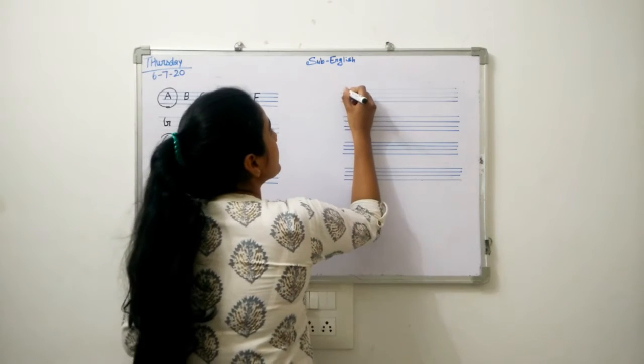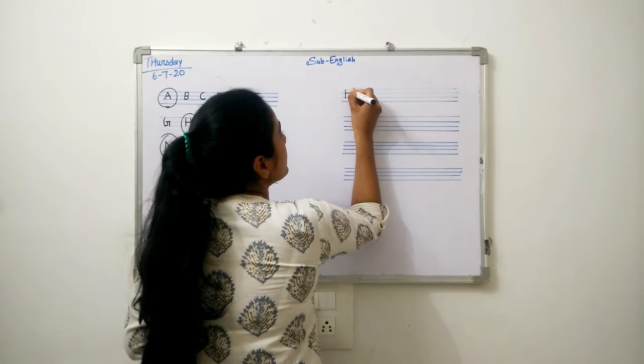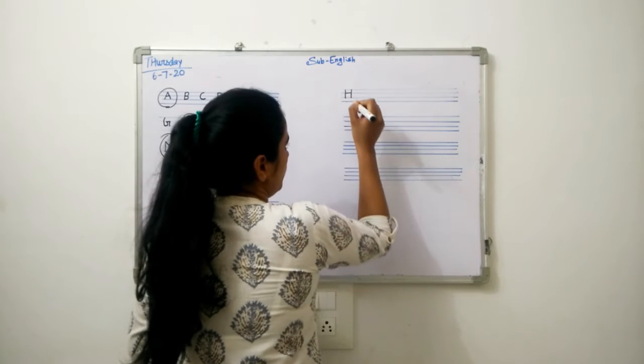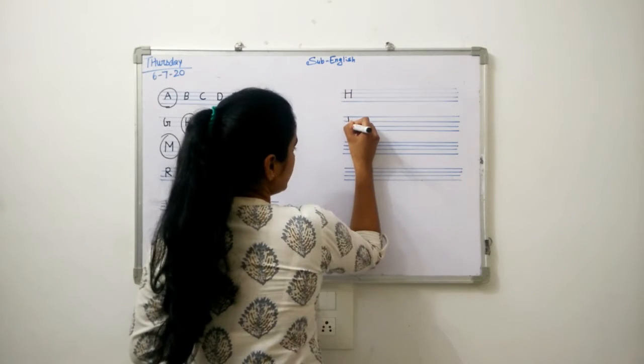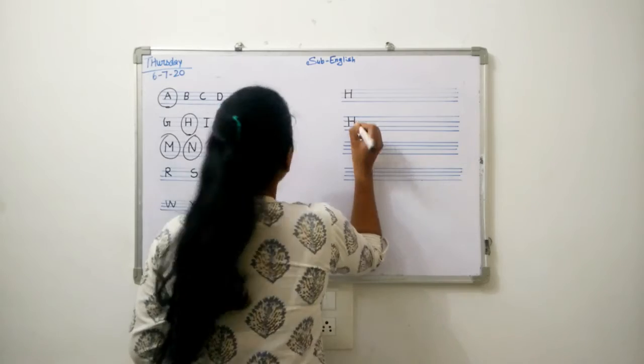Now, how to write H: standing line, slipping line, standing line. Once again: standing line, slipping line, standing line.